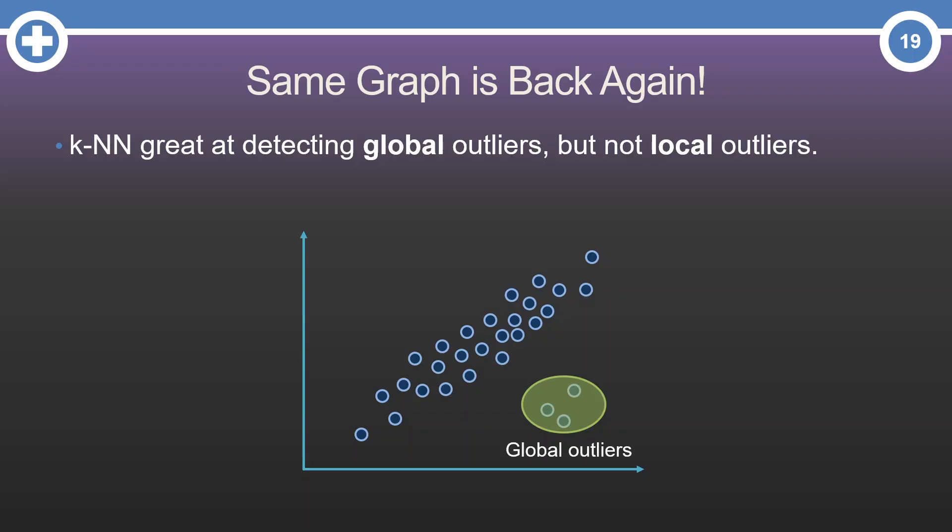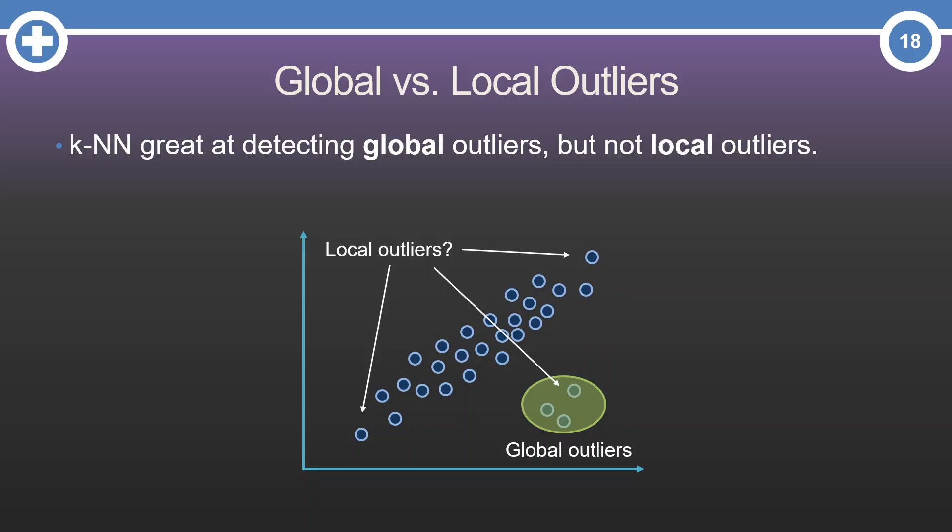For example, looking at this plot, those bottom three points stick out like a sore thumb. They are outliers globally. However, as the name suggests, the local outlier factor tries to detect observations that might be considered outliers locally, based only on the points around them, as compared to globally looking at all the points.